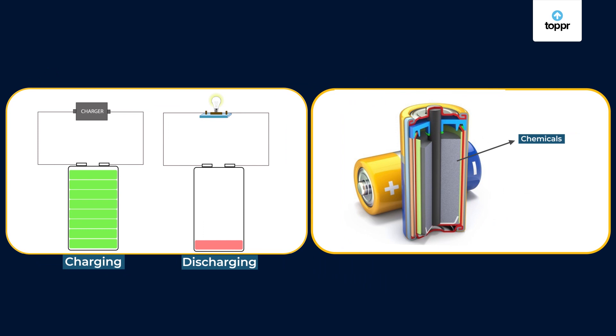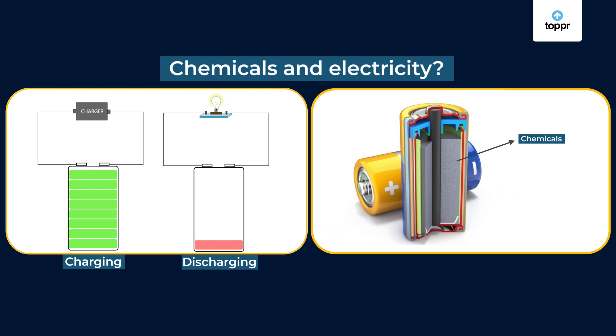These batteries get charged with electricity and discharged while producing electricity. As we already know, these batteries are filled with chemicals, so there must be some relation between chemicals and electricity. And today, we are going to verify this with some activities.